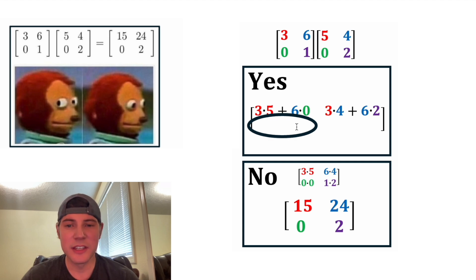And now for this one down here, this is in the second row, first column. So we're going to do second row, first column. And for this one, we're going to do 0 times 5 plus 1 times 0.